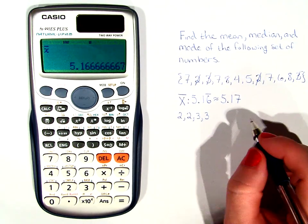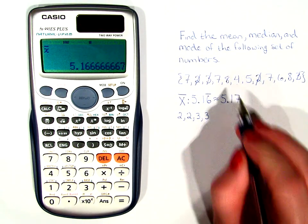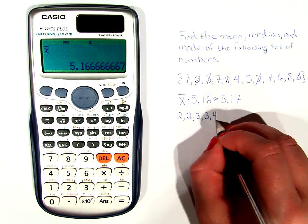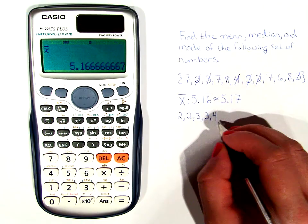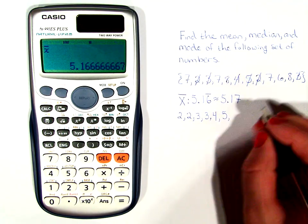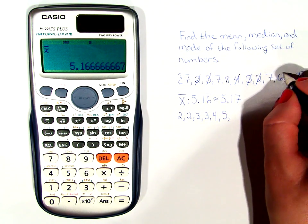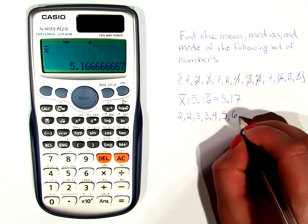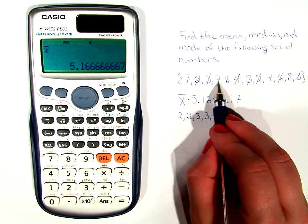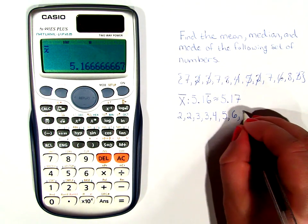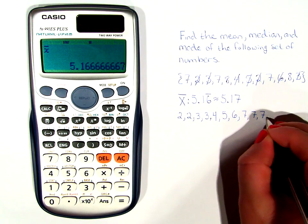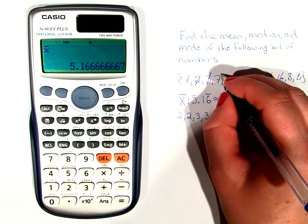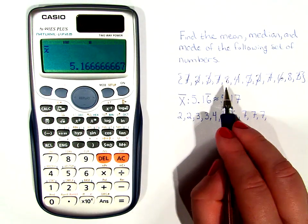Next is 4. There's only one 4, so we include that in. There's only one 5. We include that in. And there's only one 6, so we include that in. Now there are three 7's. So we write down 7 three times. And lastly, there's two 8's.